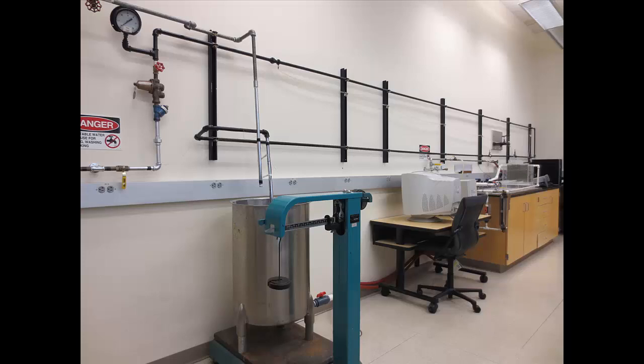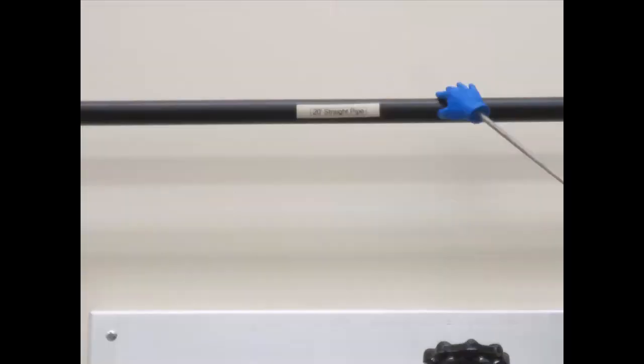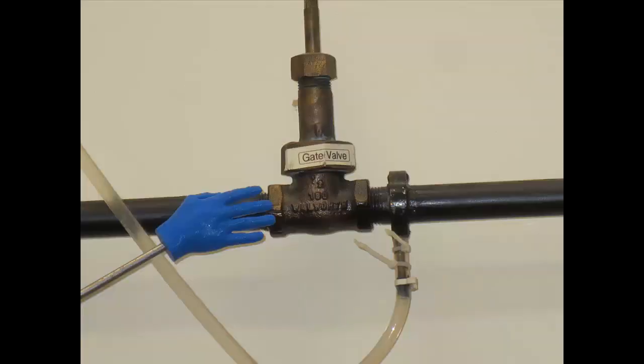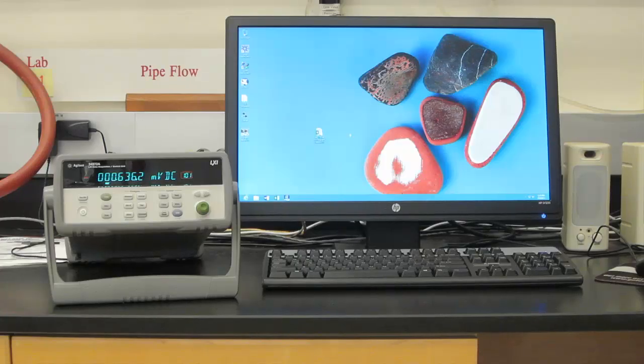The specific assignment is to determine the friction factor for half-inch steel pipe and the head loss coefficients for an elbow, a gate valve, and a globe valve by directly measuring the pressure drop.